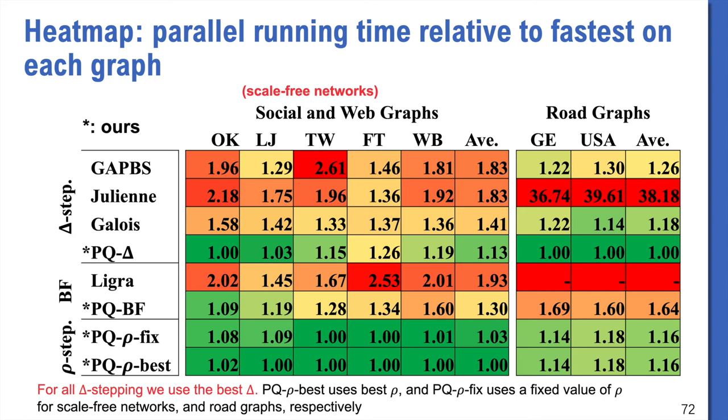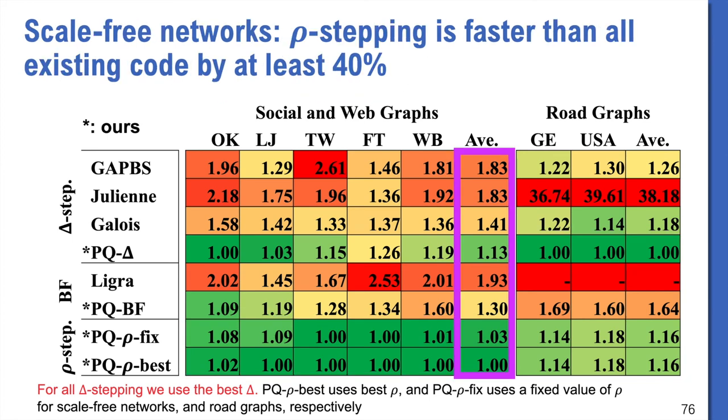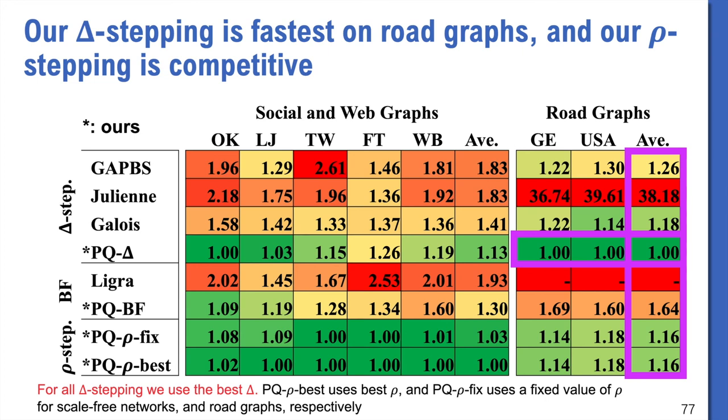For all delta-stepping implementations, we use the best delta. For Rho-stepping, we report PQRHOFIX as the running time of using a fixed value of rho. And PQRHOBEST using the best rho. We can see our implementations are much faster than the previously highly optimized graph processing systems for all graphs. On scale-free networks, our Rho-stepping is always the fastest. It's at least 40% faster than all existing implementations. Our delta-stepping is also good on average. On road networks, our delta-stepping achieves the best performance. Rho-stepping is slightly worse, but competitive to existing implementations.